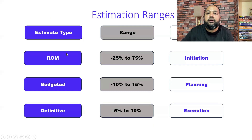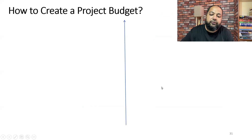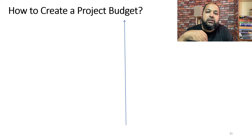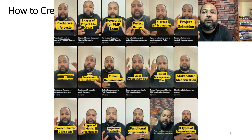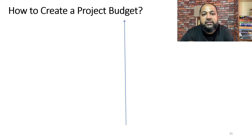As a summary of estimation ranges: ROM estimate is used in the initiating phase with a range of -25% to +75%; budgeted estimate with -10% to +15% is used in the planning phase; definitive estimate with -5% to +5% is used in the execution phase. That's about estimating cost. In the next video I will cover how to create a project budget. Please like, share, and subscribe — I also have a series of 100+ shorts on YouTube covering PMP examination concepts. Best of luck for your PMP examination!